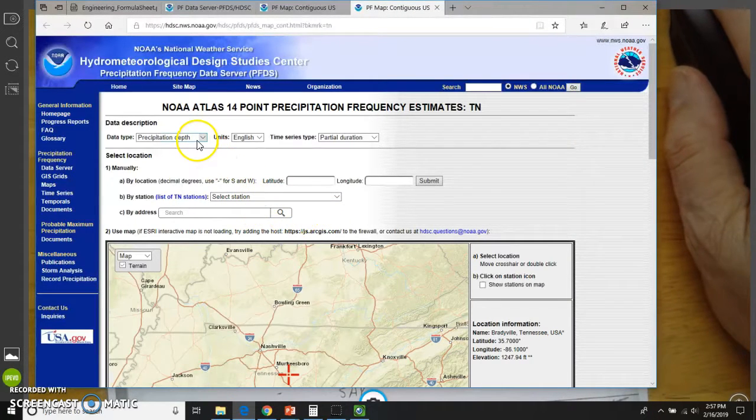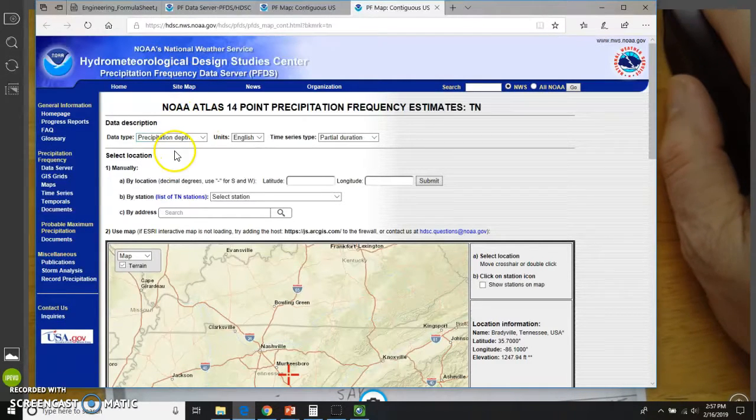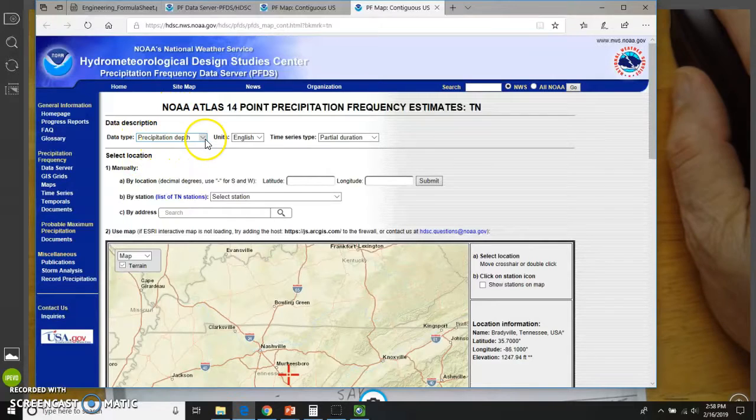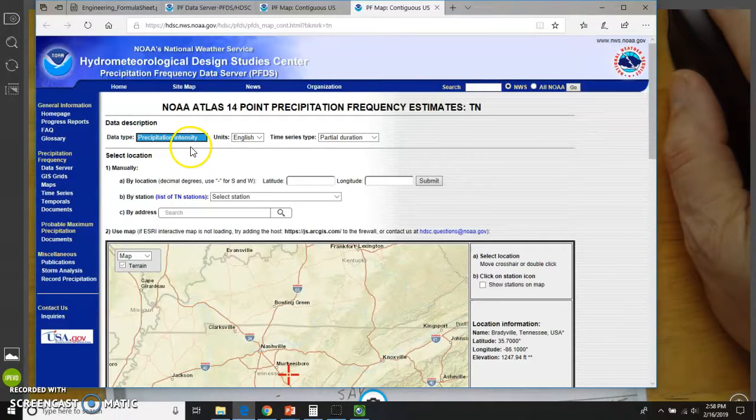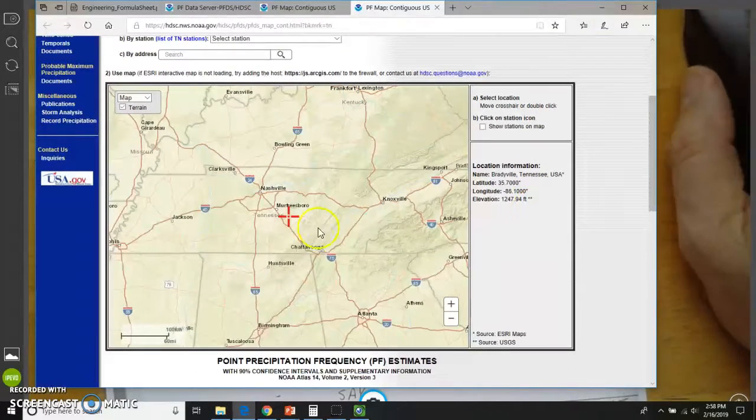And the next thing it says on your sheet is you need to click on the state and change the data type to precipitation intensity. So where I'm talking about is right here. It says precipitation depth. You want that to change to intensity. And that will give you the correct values.